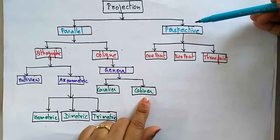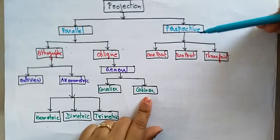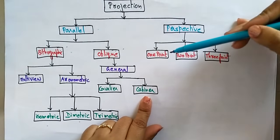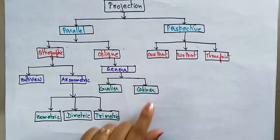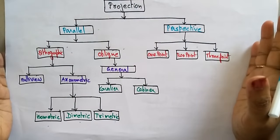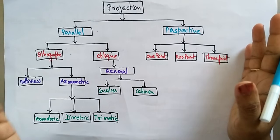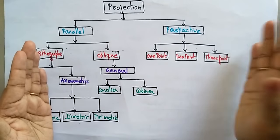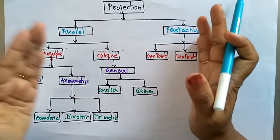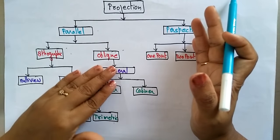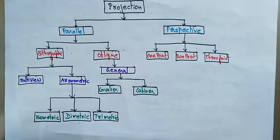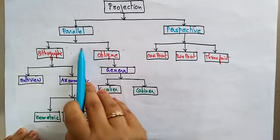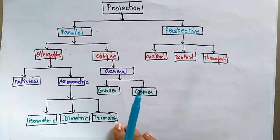The other type of projection is perspective. Perspective projection is represented as one-point, two-point, and three-point. So a projection is of two types — parallel and perspective. Parallel may be orthographic or oblique, and perspective may be one-point, two-point, or three-point. Now let me give the definitions of parallel projection and perspective projection.